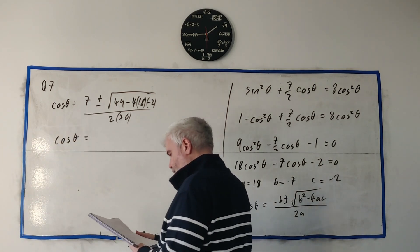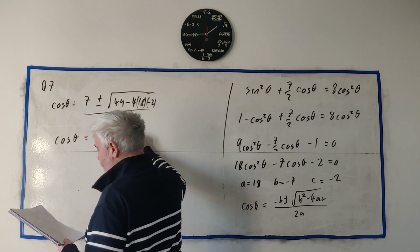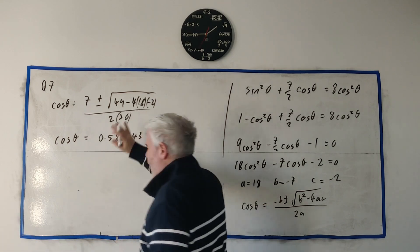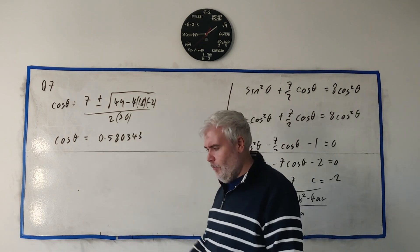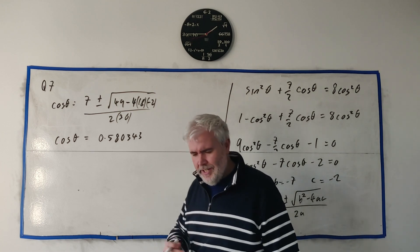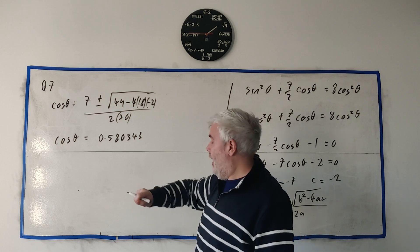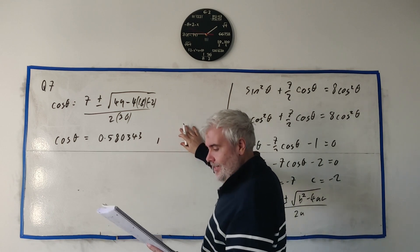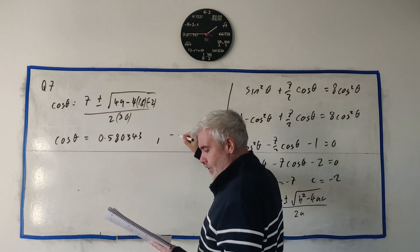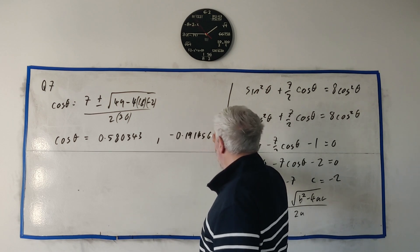We get cosine θ is equal minus B gives us a plus 7 plus or minus the square root of minus 7 squared, it's 49 minus 4 times A, which is 18 times C, which C is minus 2 all divided by 2 times 36. You clean this up, but mostly we're just putting it all in a calculator.